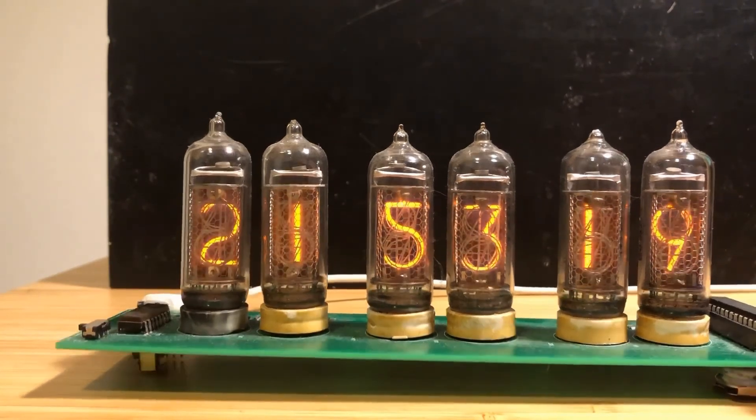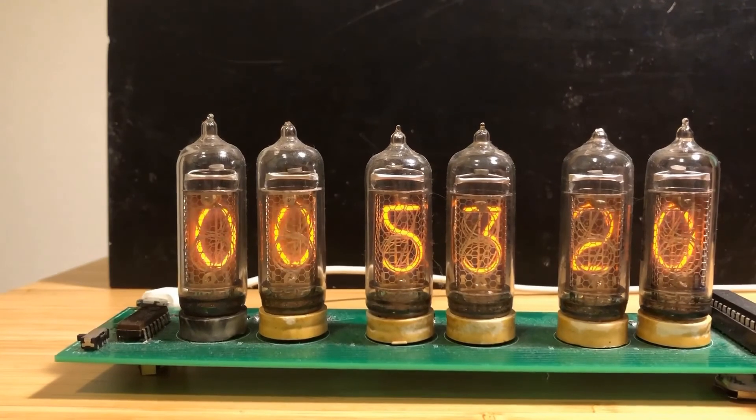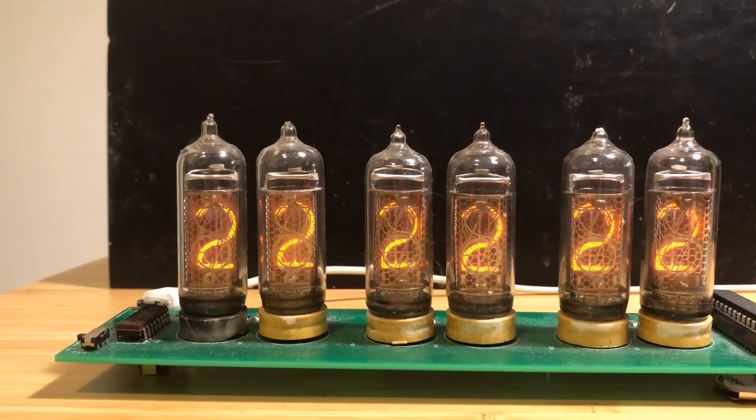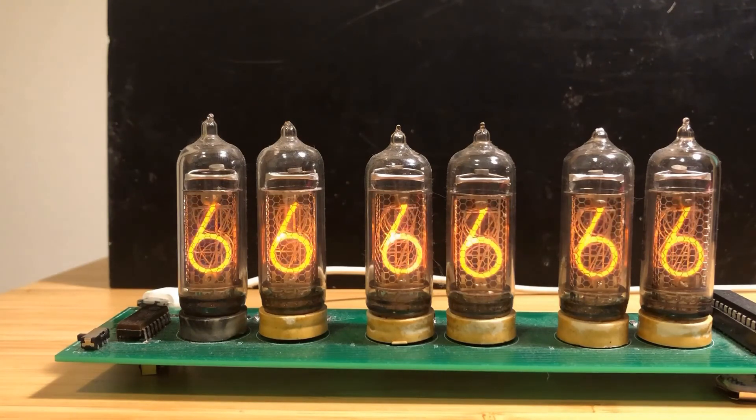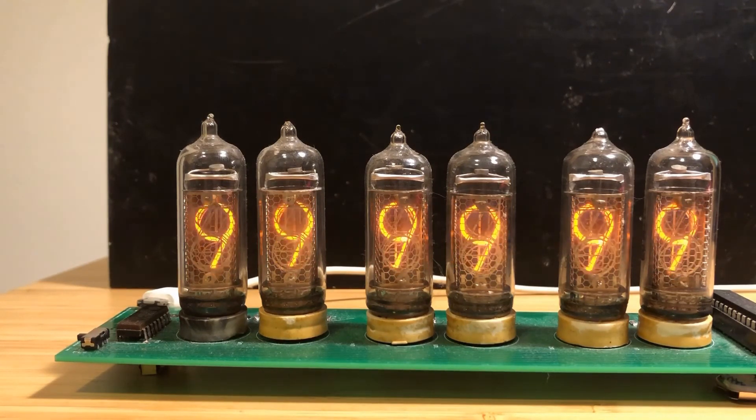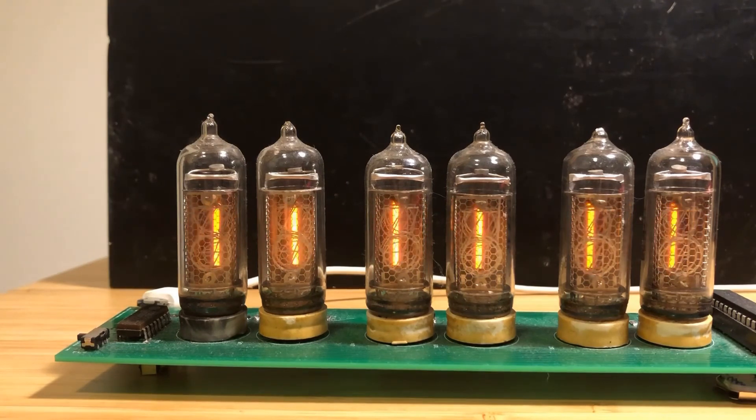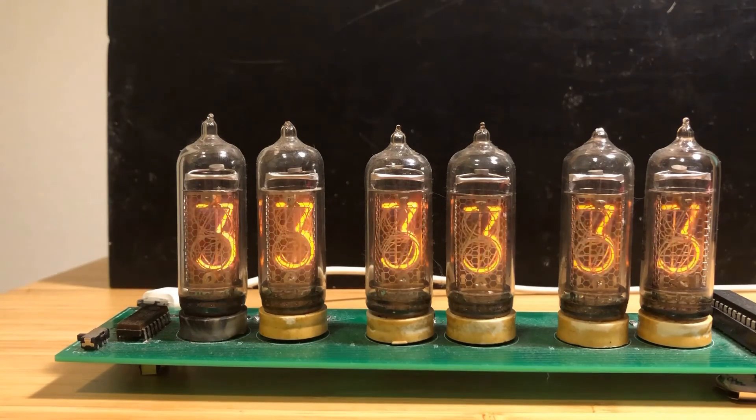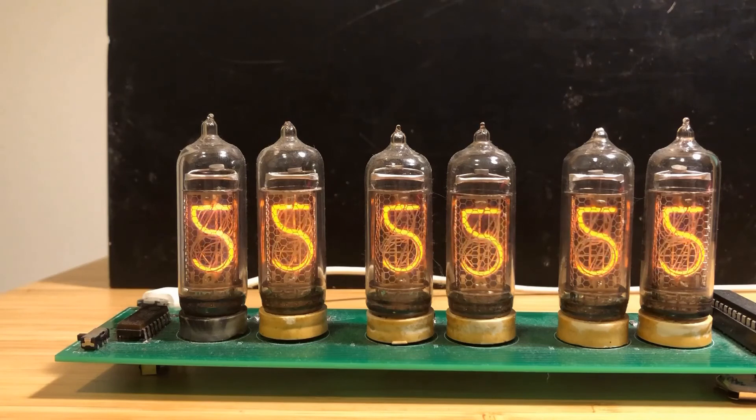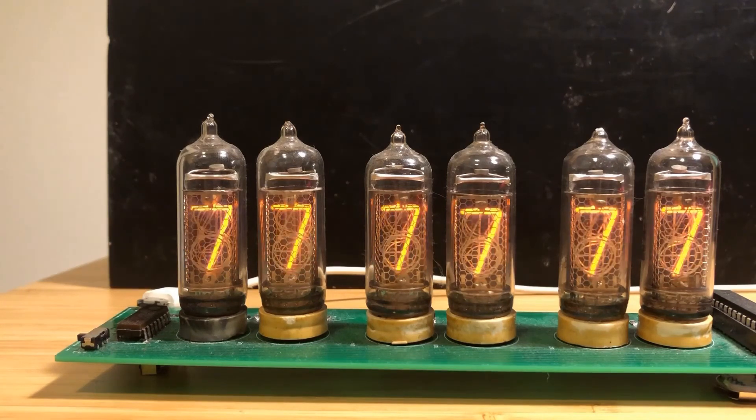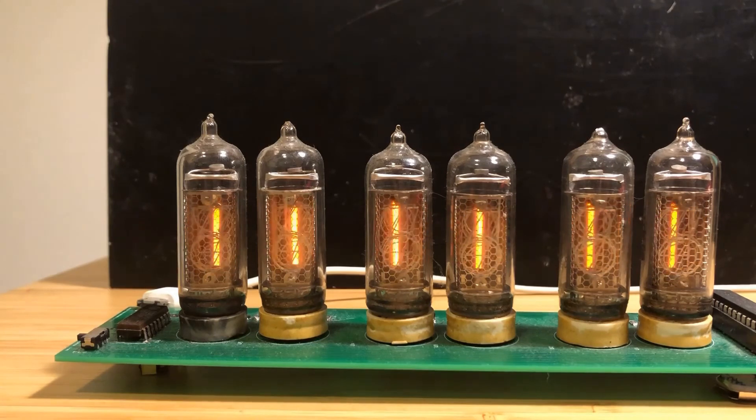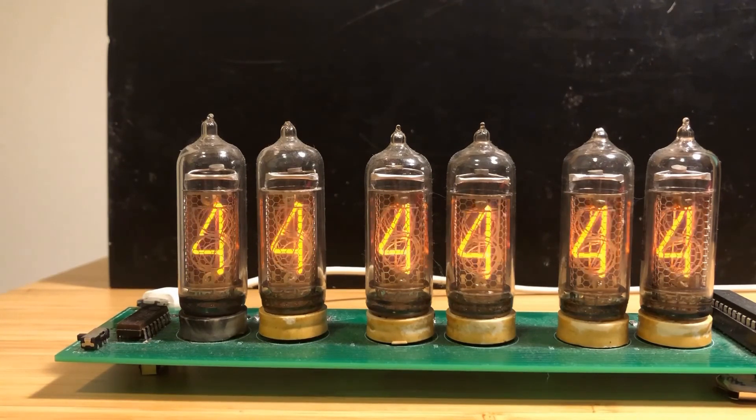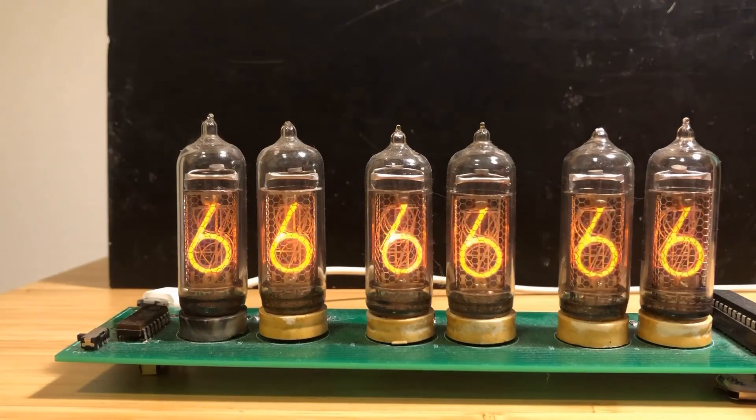A couple of other features. Every day at 2am it does this. So it does this for an hour. This is called anti-cathode poisoning, so it makes sure that all the digits are lit every day. If we choose not to light certain digits, other ones can become dim. It's just a quirk of Nixie tubes. So running this anti-cathode poisoning regime once a day, that helps prolong the lifetime.